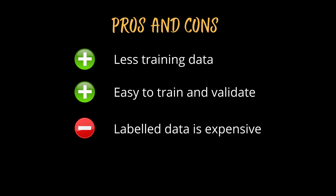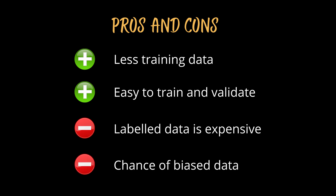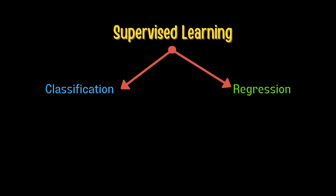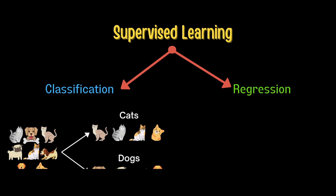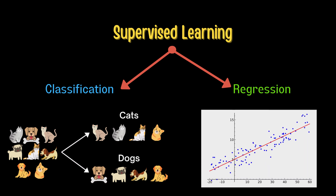The downside of supervised learning is that labeled data can be expensive to prepare, and there might be chances of overfitting or bias in the training data, which may not allow the model to handle variations in new data accurately. Supervised learning can be classified into two types: classification and regression. Classification is where the output has defined labels. Regression is where the output is a continuous value — the model predicts values closer to the actual output and evaluates by calculating the error value. Smaller the error, greater the accuracy. House price prediction is an example of regression.